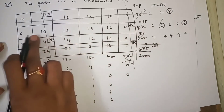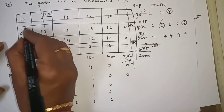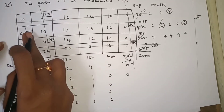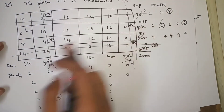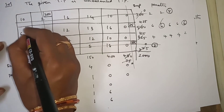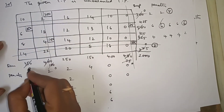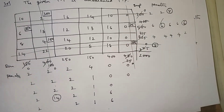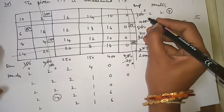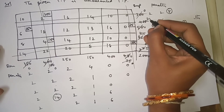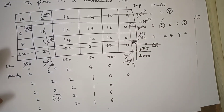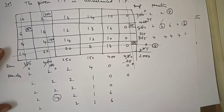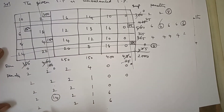Entering into the second row: the least cost element is 6. See demand: 350, supply: 425. Which one is minimum? 350. I allocate 350 here, demand becomes 0 so cancel that column. Supply remaining is 425 minus 350 = 75. Wherever you have got 0, cancel that one.